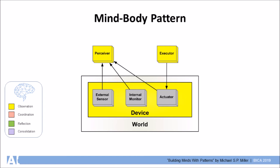The device sends to the perceiver sensations from external sensors, called exterocepts, and sensations from internal monitors, called interocepts, along with actuation results, called propriocepts. The executor sends actuation requests to the device.